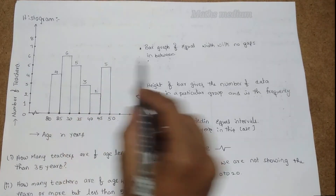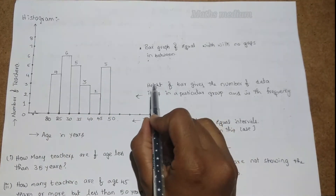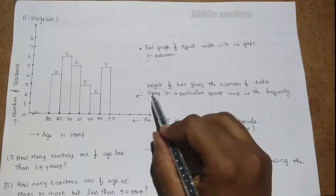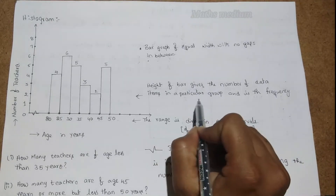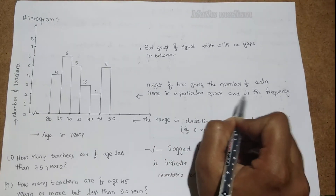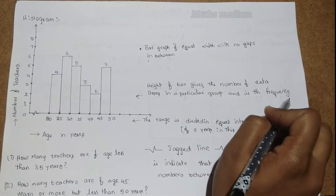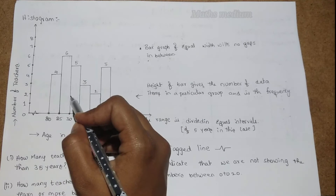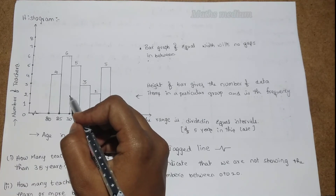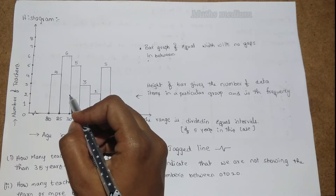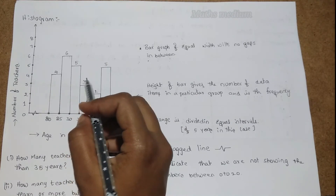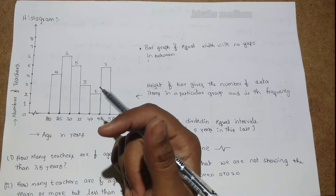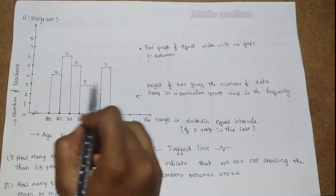The height of the bars gives the number of data items in a particular group — that is the frequency. In the frequency distribution table we know the frequency from the tally marks, and that frequency is represented by the height of the bars in the histogram.